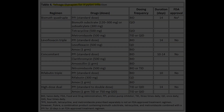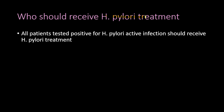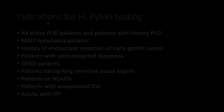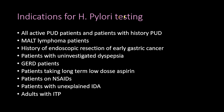All patients who test positive for active H. pylori infection should receive treatment. Indications for H. pylori testing include active peptic ulcer disease, history of peptic ulcer disease, MALT lymphoma, history of endoscopic resection of early gastric cancer, uninvestigated dyspepsia, and gastroesophageal reflux disease.